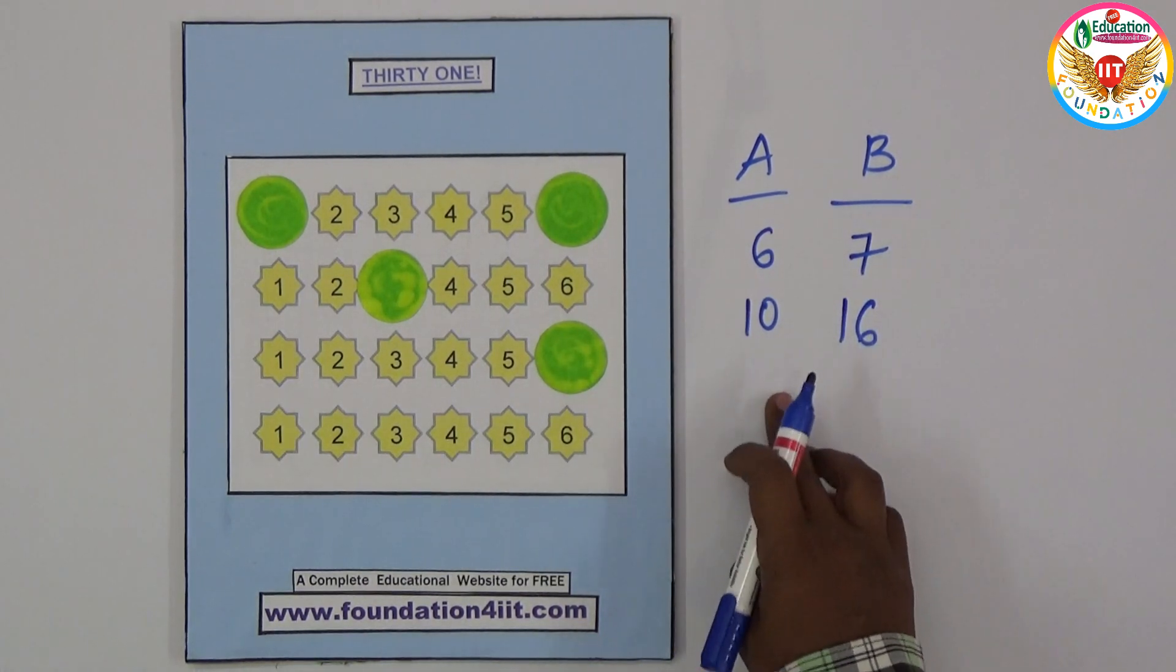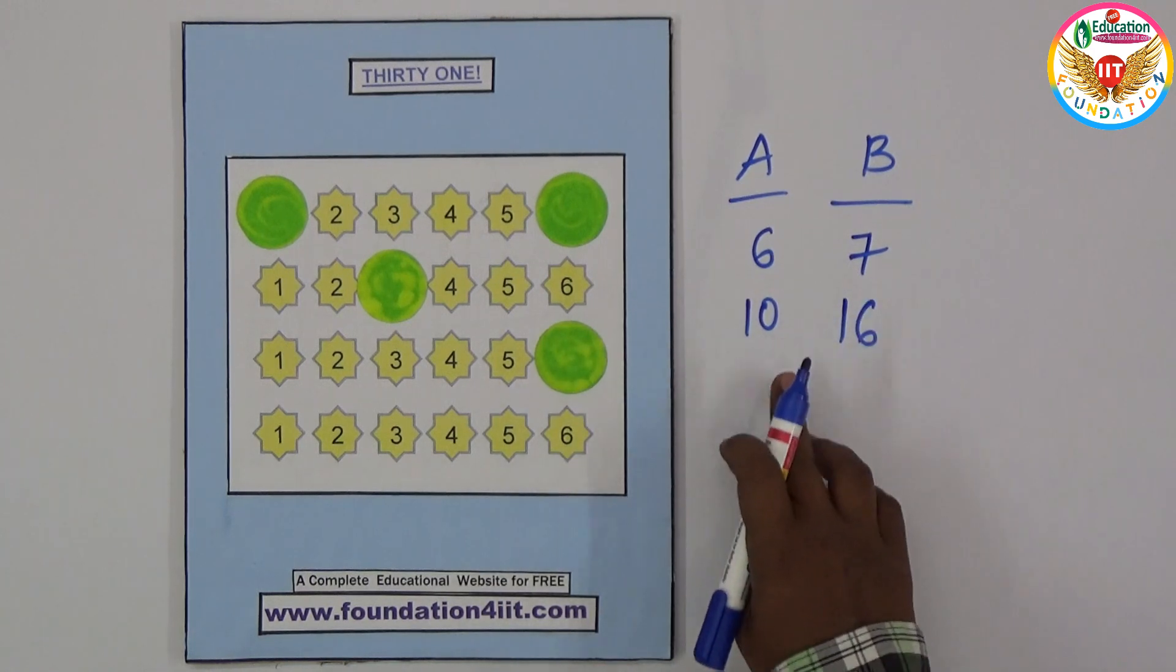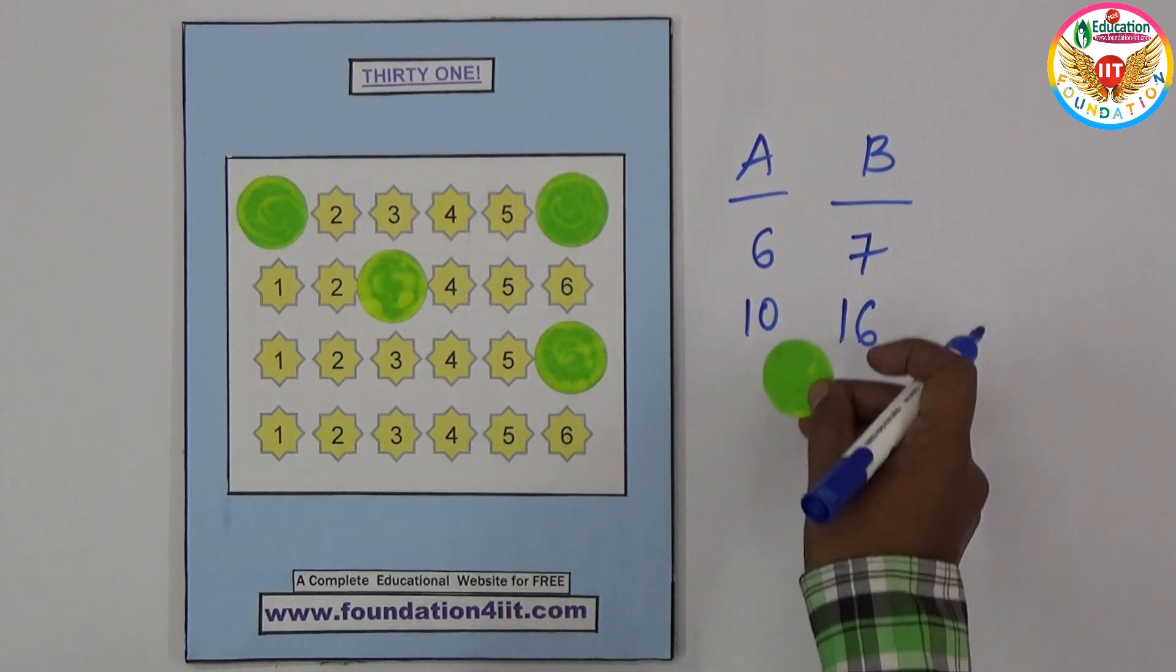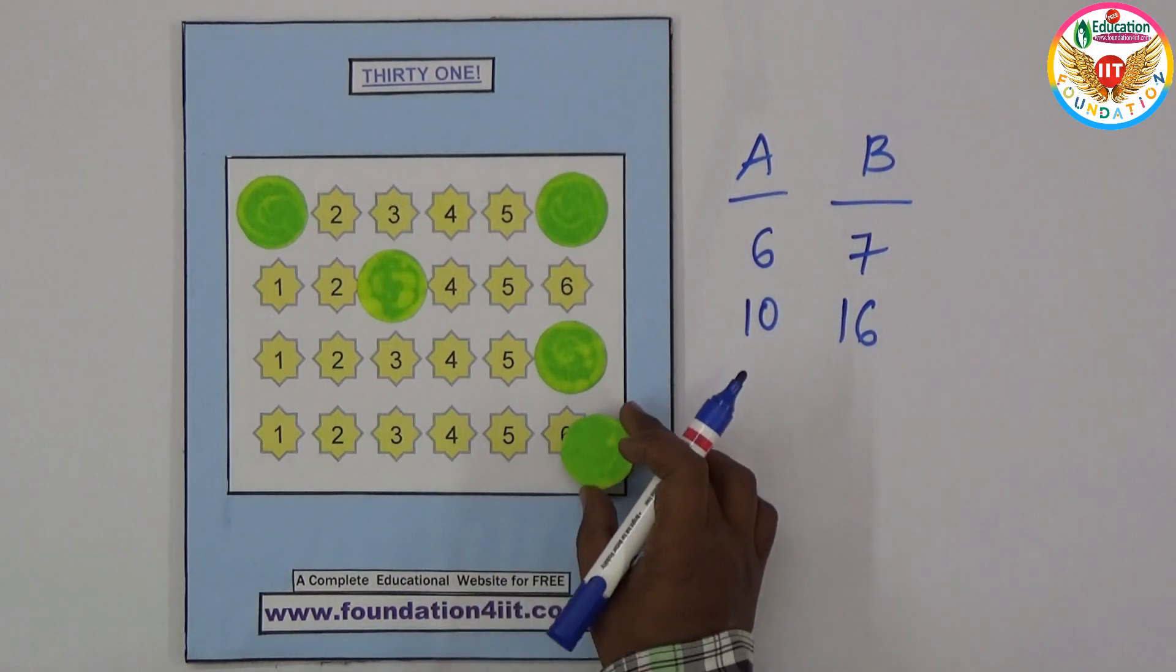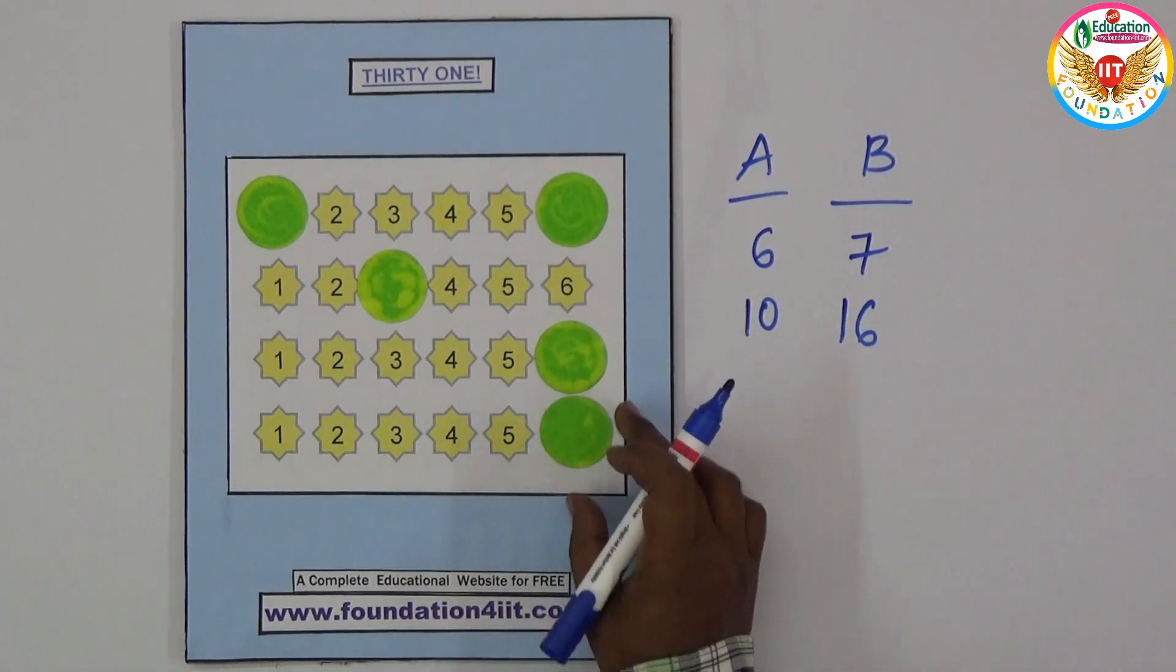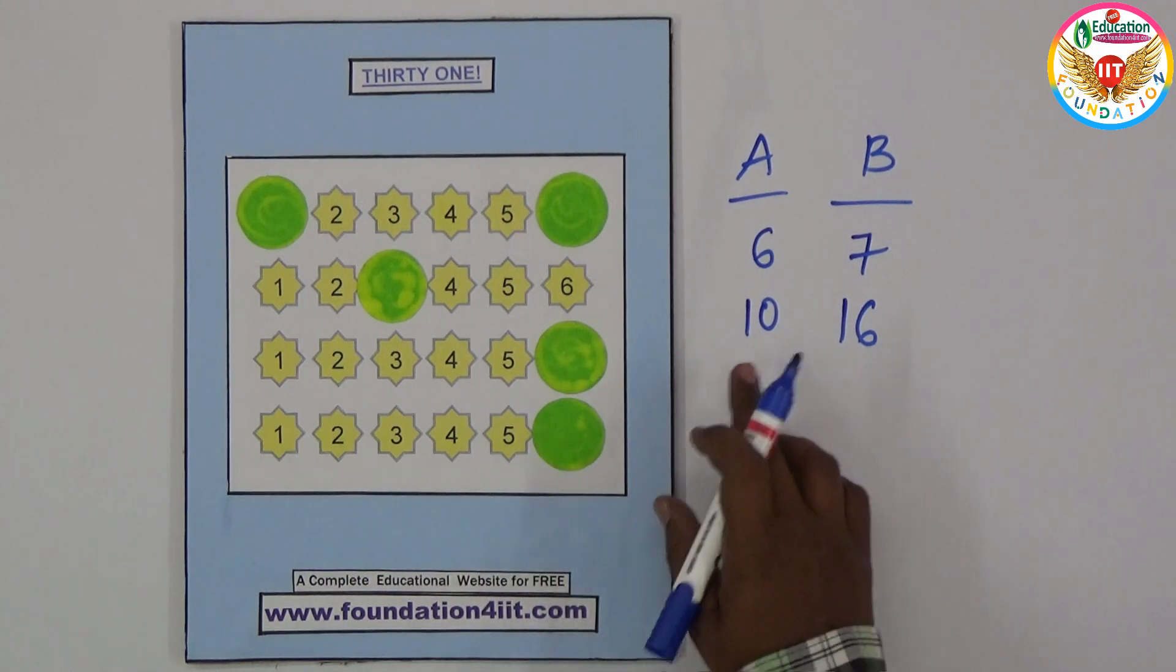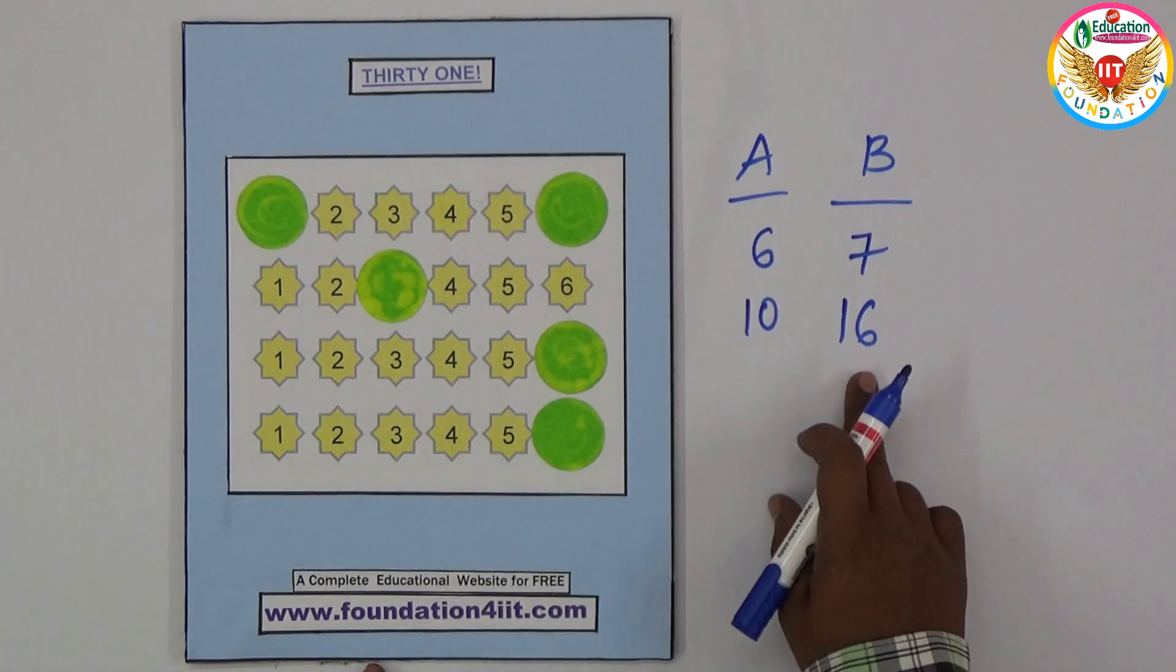Now it's turn to A. Previous is 16, we need the target 31. If you want to increase the number very fast, for example if you kept at 6, A's chance is 16 plus 6, that is 22. To get 31, more 9 we require, so there's no 9 chance.